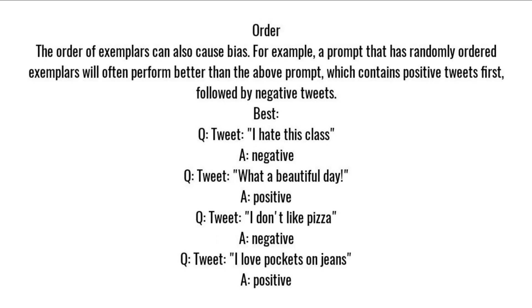Order. The order of exemplars can also cause bias. For example, a prompt that has randomly ordered exemplars will often perform better than a prompt which contains positive tweets first, followed by negative tweets.